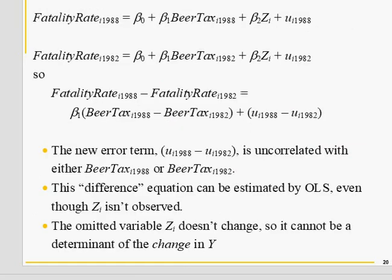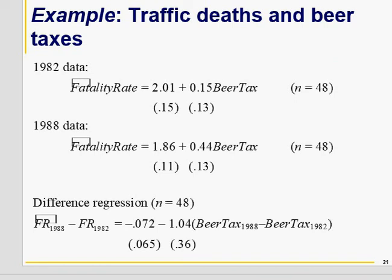Though Z_ei is omitted, its impact is eliminated by differencing. Whatever is left reflects the effect of the tax rate. After subtracting the second equation from the first, Z_ei cancels out; the new error term is also uncorrelated with the beer tax difference. We will call this the difference-in-differences equation — we will discuss it in detail when we cover randomized control trials. The result now shows a negative coefficient, meaning increasing beer tax from 1982 to 1988 leads to a decrease in deaths.